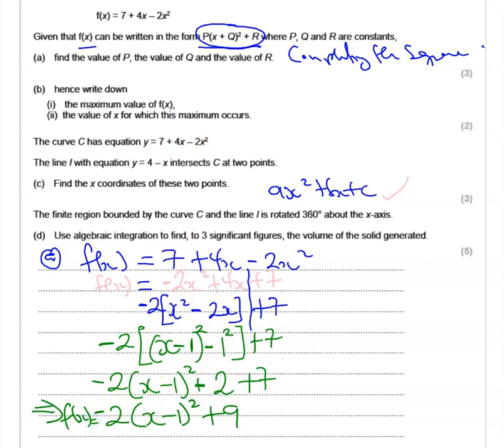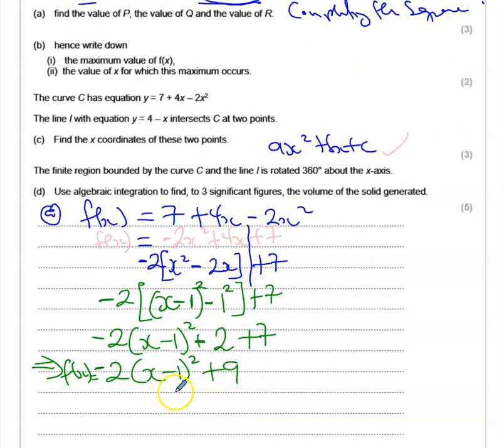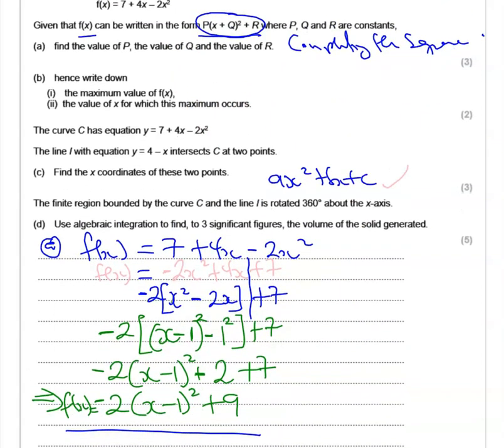Following on from here, we now would like to compare what we've arrived at with what the question is requiring us to do. We want to compare terms. So our P then is going to be -2 because we have -2 in front of the (x - 1), and then our Q is going to be -1, whilst our R equals 9. So that answers the part A of the question.